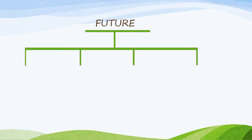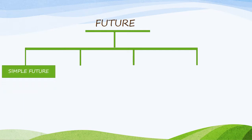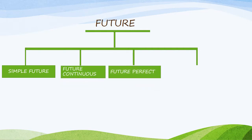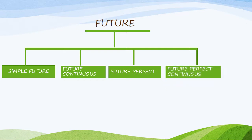Future tense is divided into four types. First, simple future. Second, future continuous. Third, future perfect. And fourth, future perfect continuous.